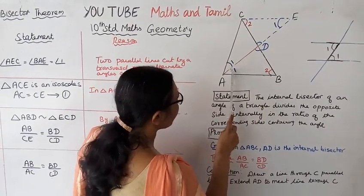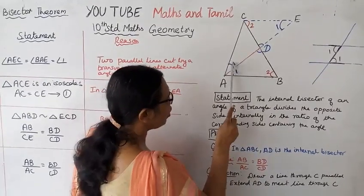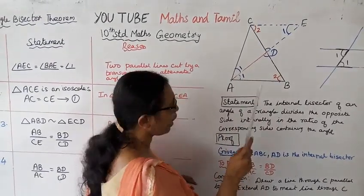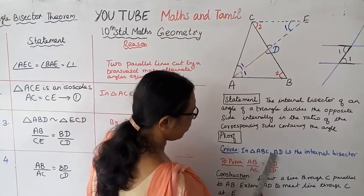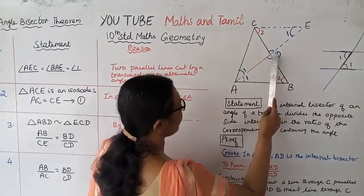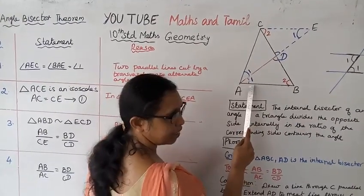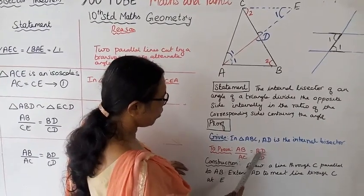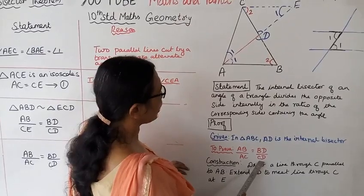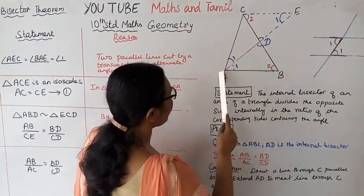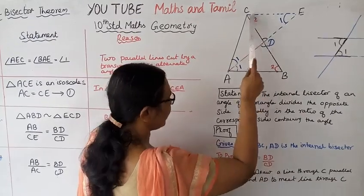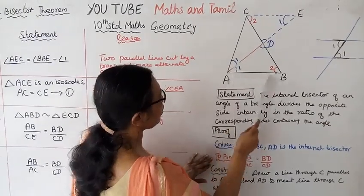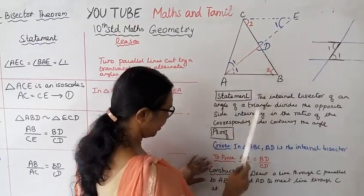AD is the internal bisector. To prove: AB/AC = BD/CD. That is the proof — AB/AC = BD/CD. Construction.